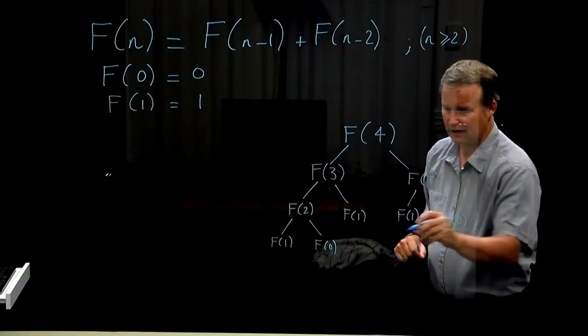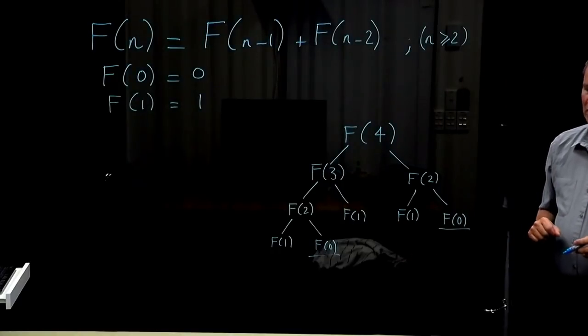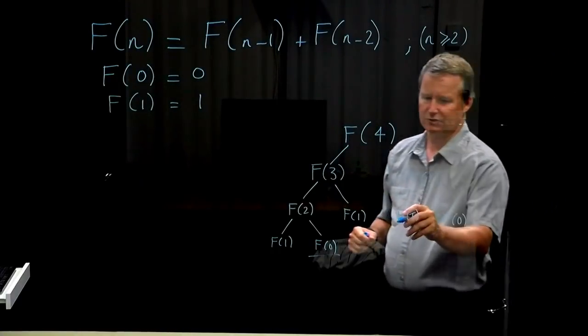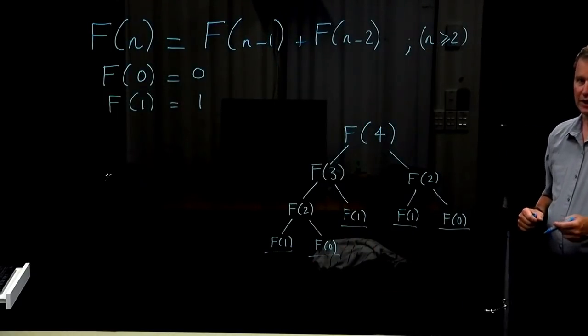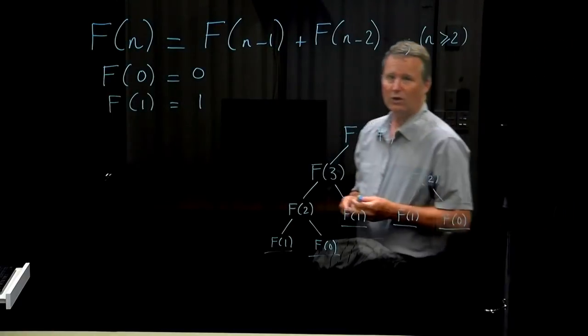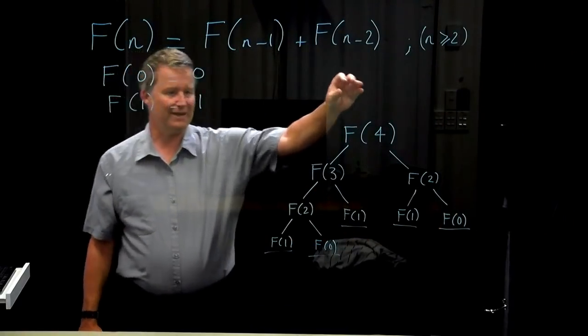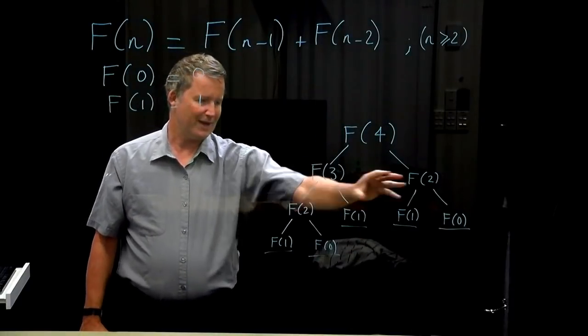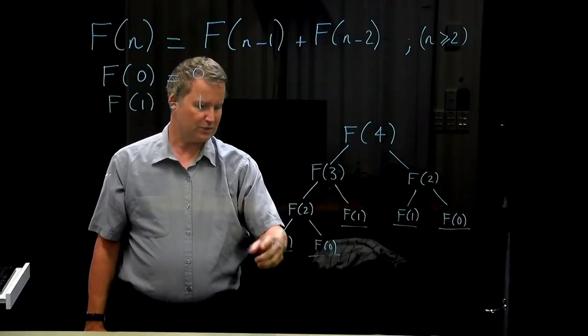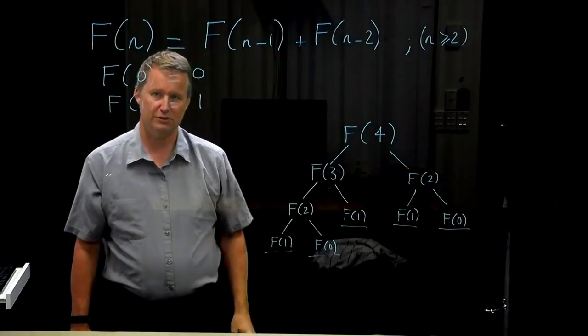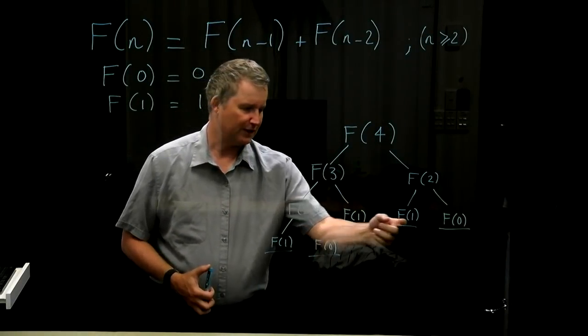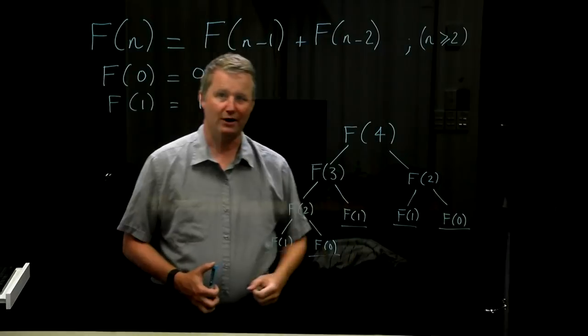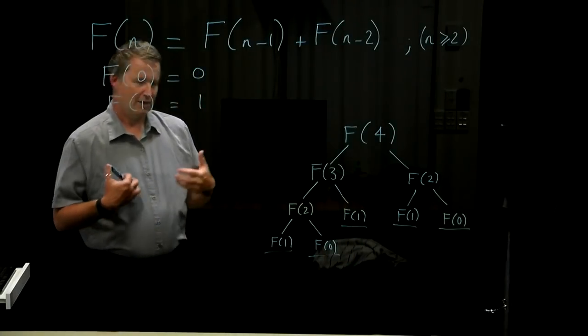You can see here that F of 0 is calculated twice. But we only really needed to calculate it once if we were clever. Similarly, F of 1 is done several times. In fact, the whole algorithm just starts with some n, recursively goes all the way down to the bottom, and then it ends up with these numbers F of 1 and F of 0, which are 1 and 0, respectively. And it just adds them up. So the actual answer is going to be the number of leaves at the bottom here which have an F of 1. That's what it's going to turn out to be.